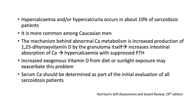Hypercalcemia occurs in about 10% of sarcoidosis patients and is more common among Caucasian men. The mechanism is increased production of 1,25-dihydroxycholecalciferol by the granuloma itself, which then increases intestinal absorption of calcium, leading to hypercalcemia.